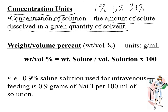The first one is weight by volume percent, and the units for weight by volume percent will be grams per milliliter. Weight by volume percent is the weight of the solute divided by the volume of the solution, multiplied by 100 to make it a percent.